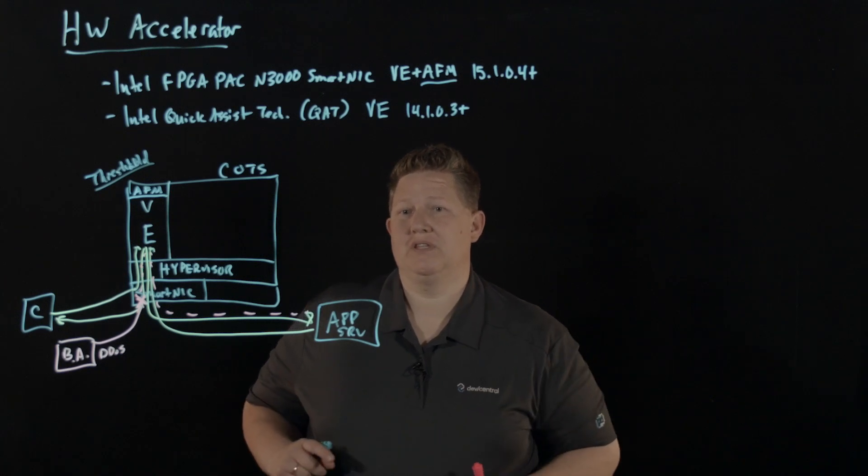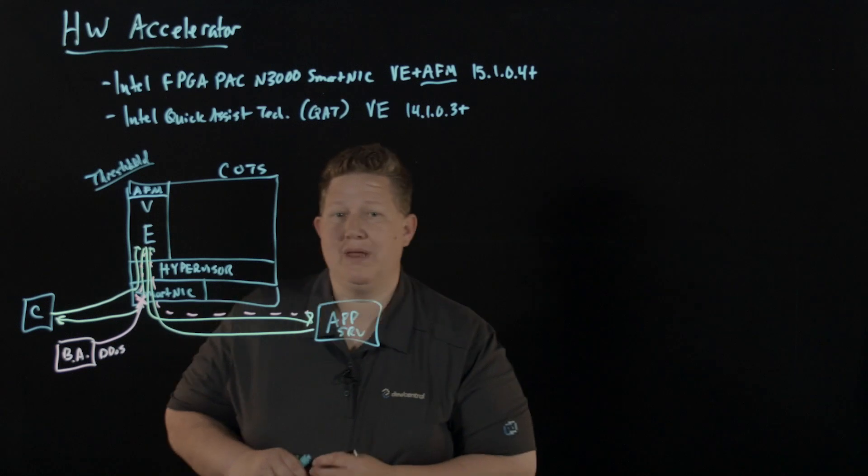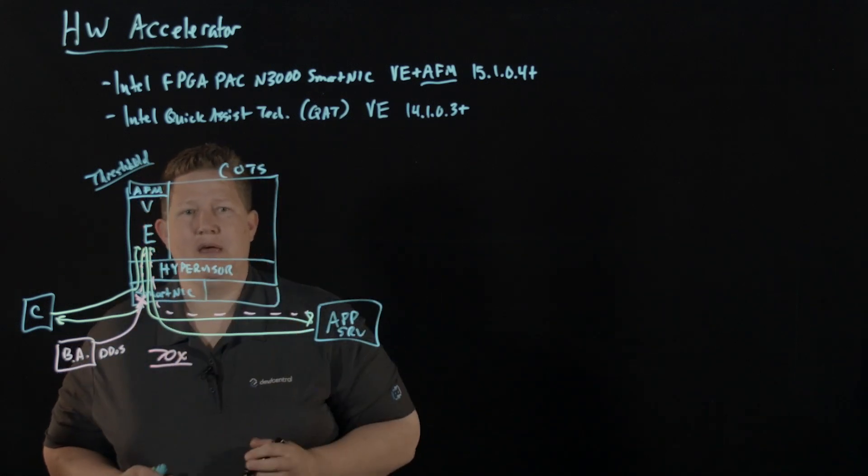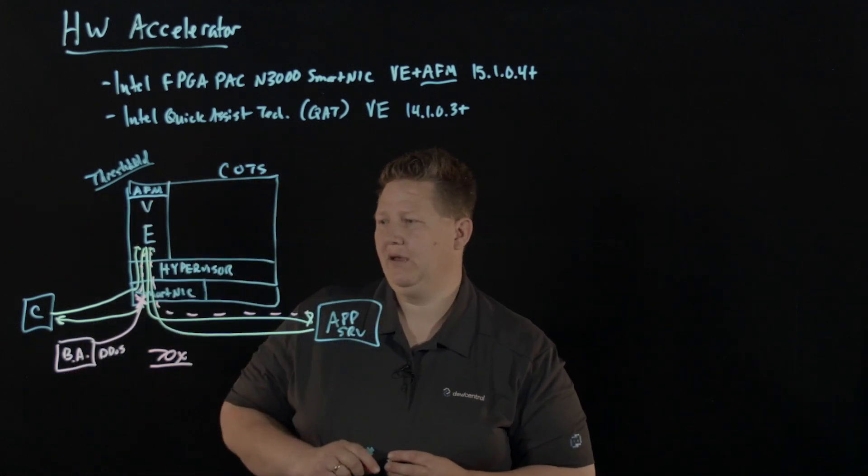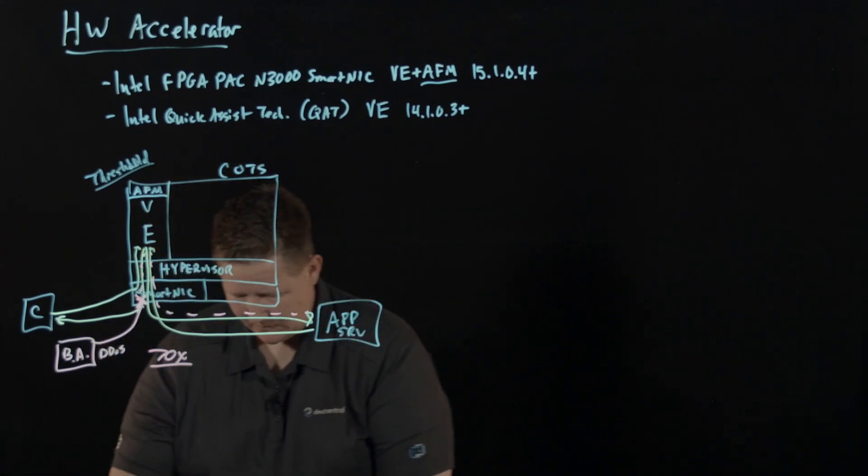And in F5's testing, it shows that this VE with AFM SmartNIC solution is able to mitigate a DDoS attack at 70 times greater in magnitude than with AFM and VE alone. So SmartNIC, great solution.